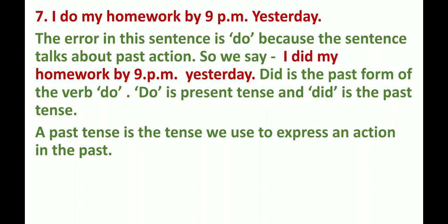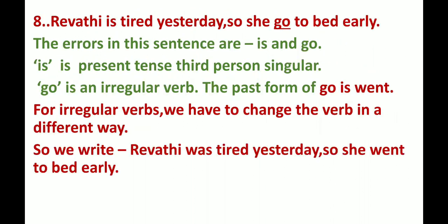A past tense is the tense we use to express an action in the past. Number 8: Revati is tired yesterday, so she go to bed early. The errors are 'is' and 'go'. 'Is' is present tense third person singular. 'Go' is an irregular verb — the past form of 'go' is 'went'. For irregular verbs, we have to change the verb in a different way. So we write: Revati was tired yesterday, so she went to bed early.